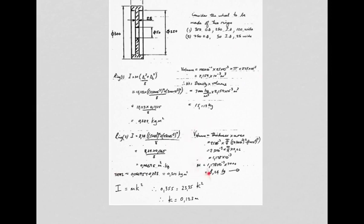Ring two, the inner piece, has mass 8.24 kg and its own mass moment of inertia. Since both are about the same axis of rotation they may be added, giving a total I = 0.355 kg·m². Finally, using I = mk², with total mass added together, the radius of gyration of the entire flywheel is 123 mm from the axis — that imaginary point where all mass could be considered to act.